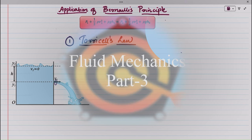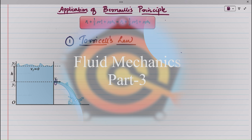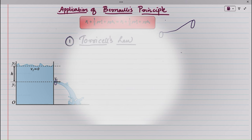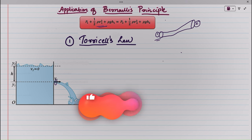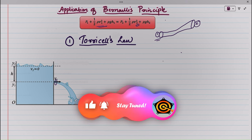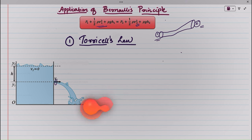We are going to discuss the application of Bernoulli's principle. Bernoulli's principle is about the energy conservation law of a fluid passing through a pipe — specifically an incompressible fluid. At point 1 and point 2, the pressure and the total energy at point 1 will be equal to the pressure and the total energy at point 2. One consequence is Torricelli's law, which is derived from Bernoulli's principle.